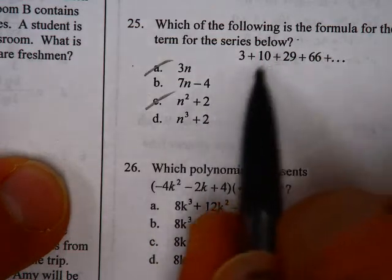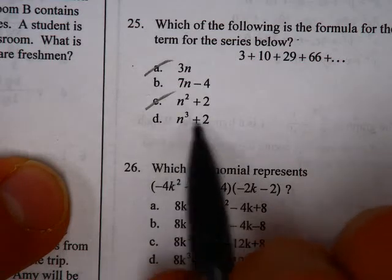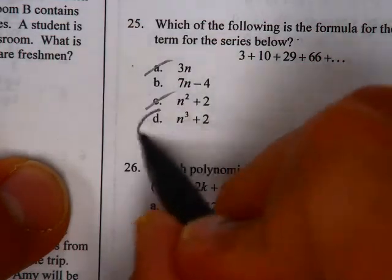But does this work? Plug in three. Three to the third power is 27. 27 plus two is equal to 29. So the answer is d.